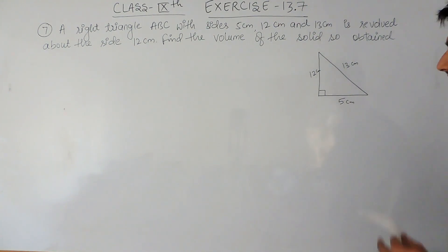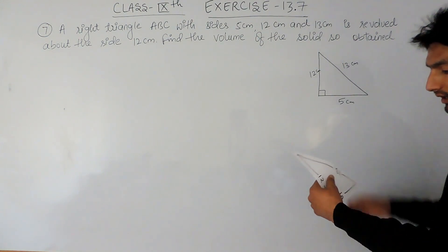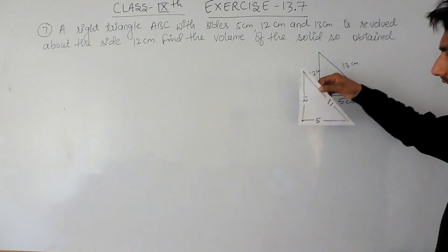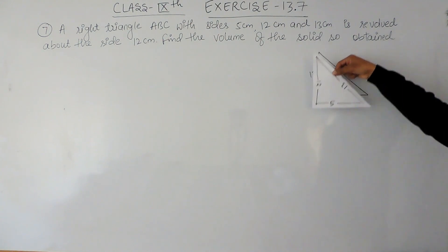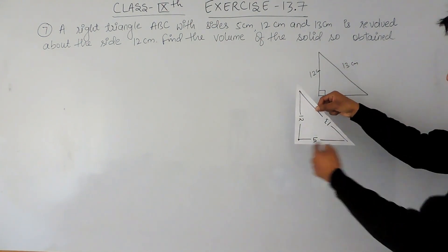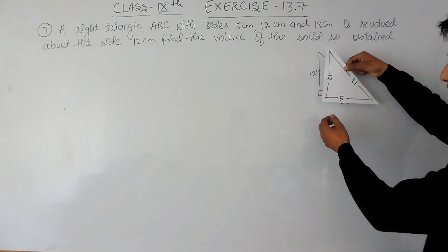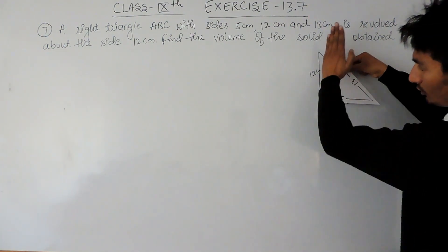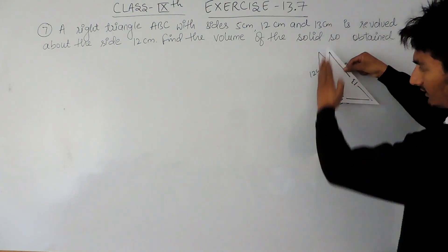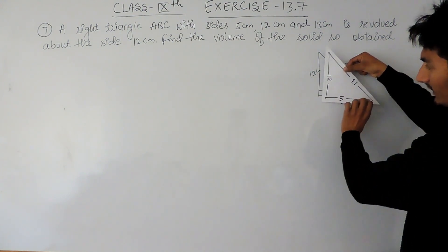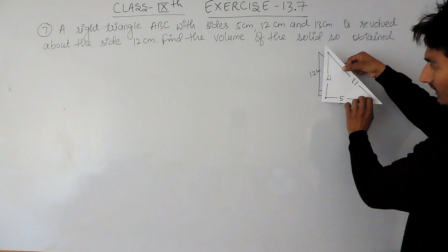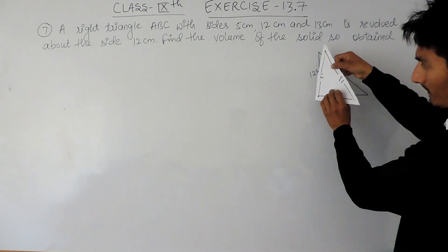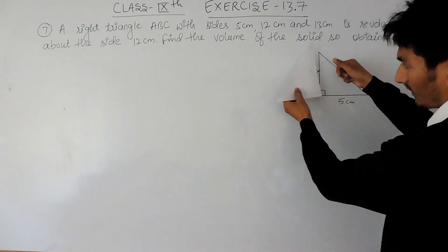Because this is a 3D figure it cannot be formed on this board, so I am taking a paper. This is the same right angle triangle with sides 12, 5 and 13, and you have to revolve this about the side 12, means you have to make this side constant and you have to revolve like this.